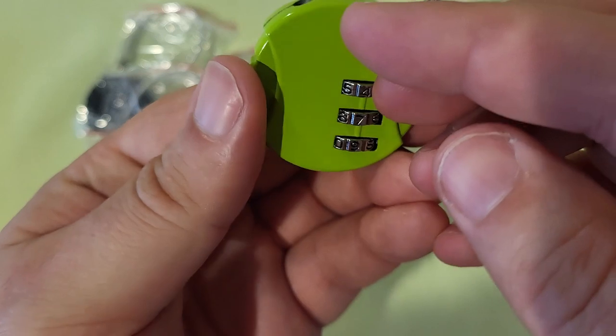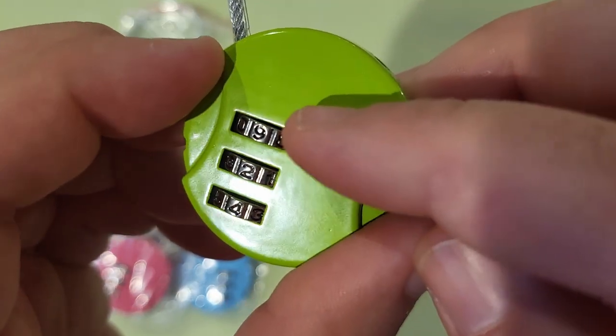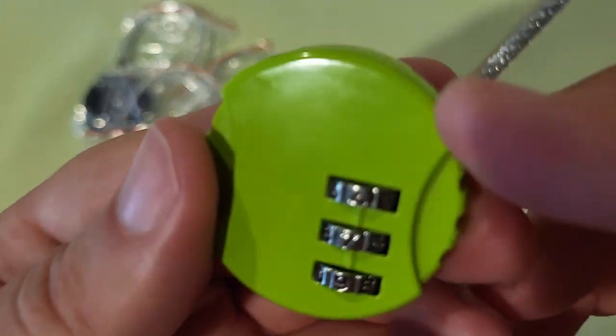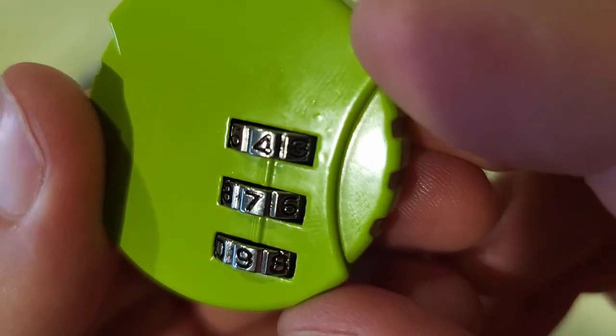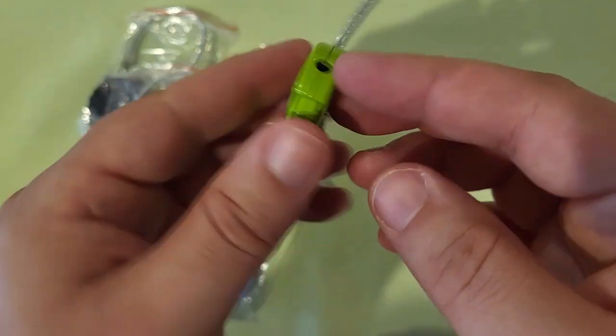By the way, depending on which way you're holding it, it looks like two different combinations. It's nine two four from this direction, but it's four seven nine from that direction. So it's good to know, make sure that you try both sides whenever you put the combination in.